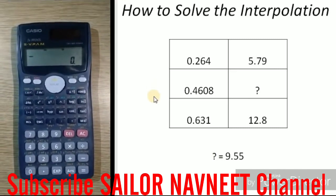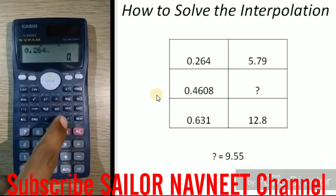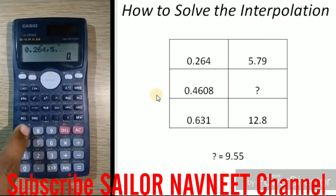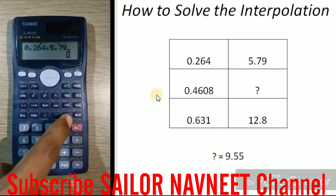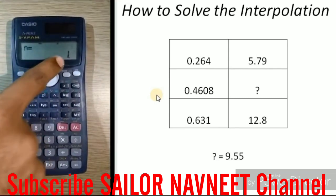If first of all, enter the first two values, that is 0.264, then 5.79, then enter the button and press the button M+. You can see here, the n is equal to 1, that is the first two values of our interpolation.